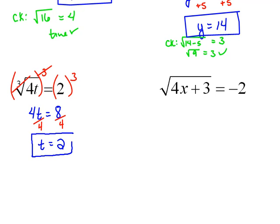And again, we always want to double-check ourselves. The check on that would be to say the cube root of 4 times 2 is supposed to equal 2. Well, that says the cube root of 8 equals 2. And that, in fact, is a true statement. So that checks.